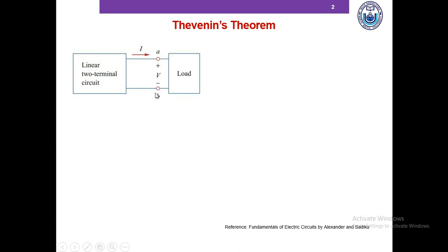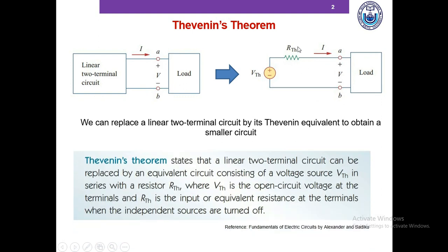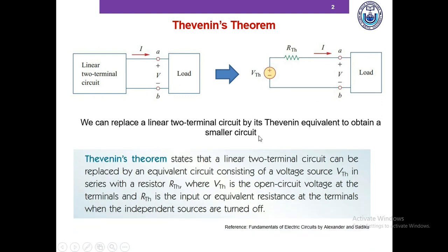Now to overcome this problem, Thevenin's theorem provides us a technique by which the fixed part of the circuit is replaced by an equivalent circuit consisting of just two circuit elements. Vth, the independent voltage source, is called the Thevenin voltage and Rth is called the Thevenin resistance. To find the Thevenin equivalent of a circuit we need to determine these two circuit elements, Vth and Rth.